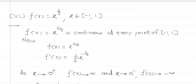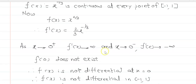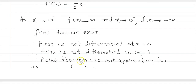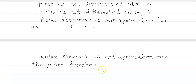Question 1: f(x) = x^(2/3), x belongs to the closed interval [-1, 1]. The function is continuous at every point on [-1, 1]. Its derivative is f'(x) = (2/3)x^(-1/3). As x tends to 0 from the right, f'(x) tends to +∞, and from the left, f'(x) tends to -∞. Therefore f'(x) does not exist at x = 0, so f(x) is not differentiable on (-1, 1), and hence Rolle's theorem is not applicable.